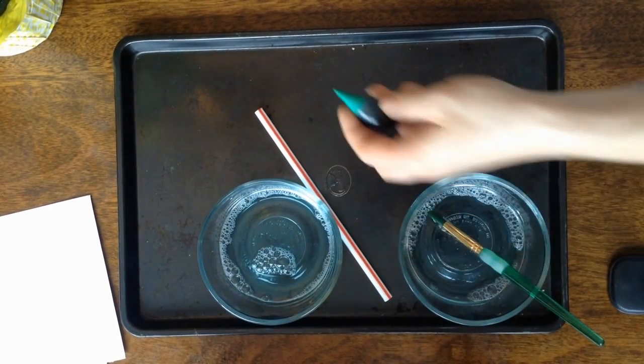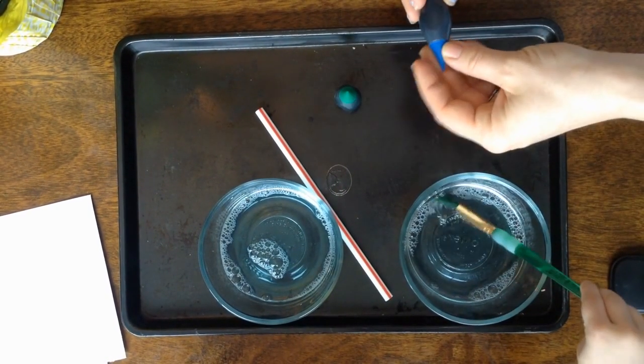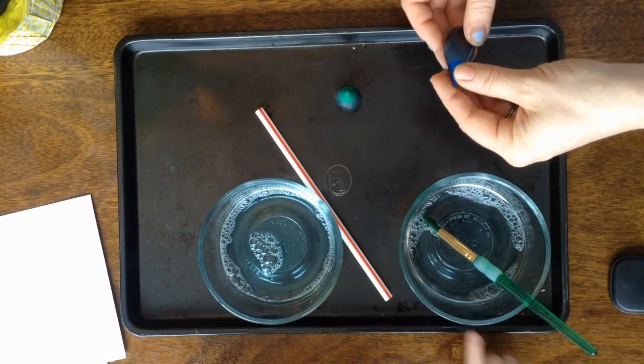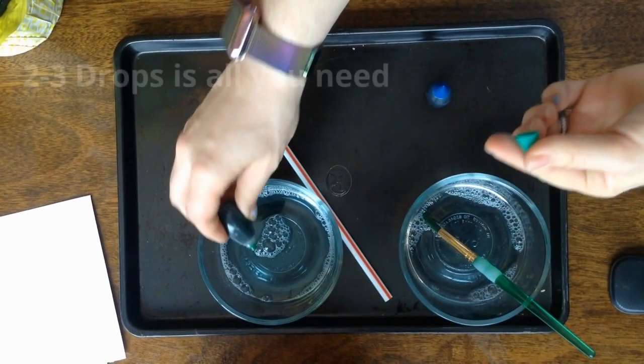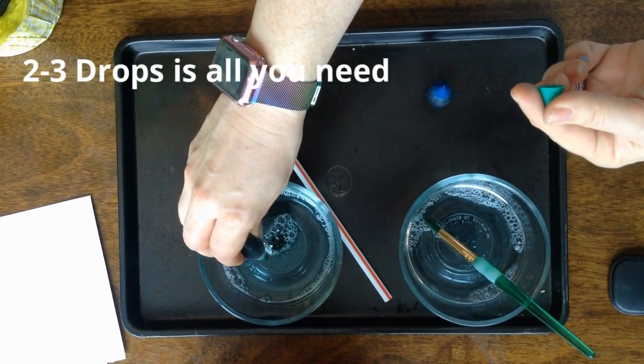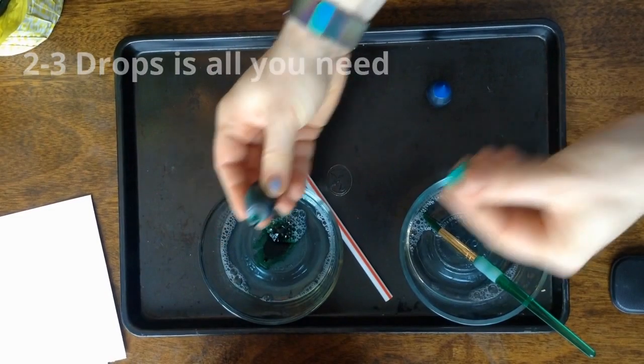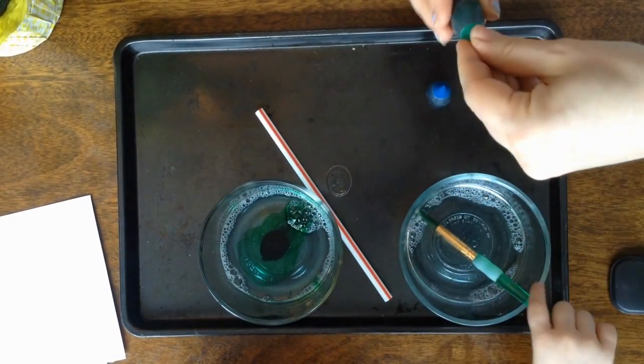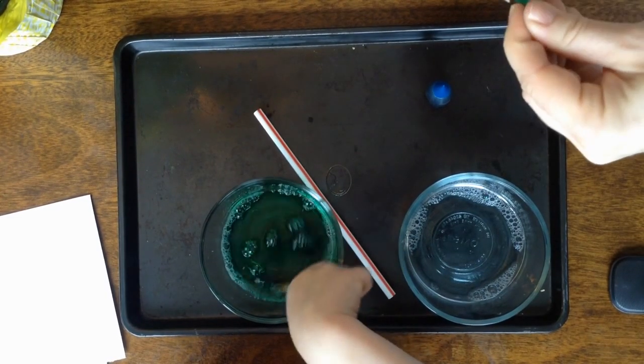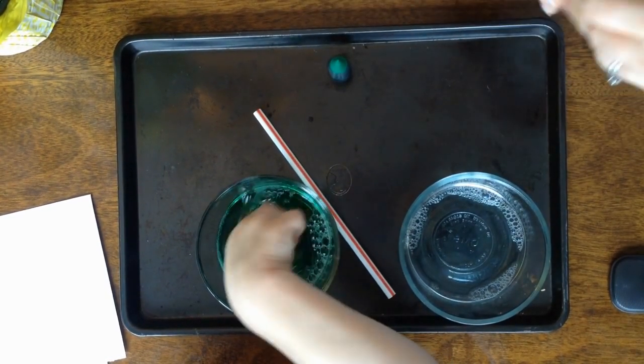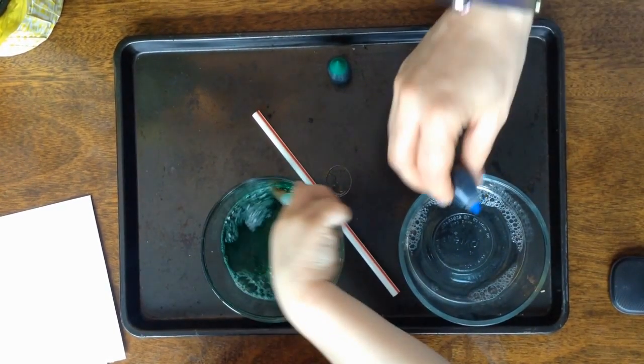The next thing is we've got our food coloring. So your favorite color is green, that's right. I'm going to put some green drops in here, okay? You don't need a lot, just a little bit. Can you mix that for me with the paintbrush?